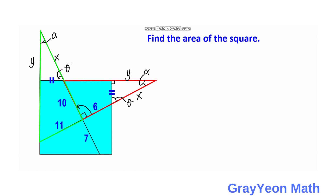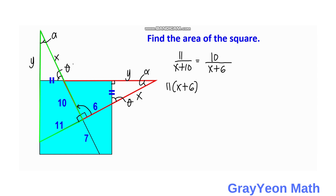We use opposite over adjacent. For the green triangle, the opposite to alpha is 11 and the adjacent is x plus 10. For the red triangle, the opposite is 10 and the adjacent is x plus 6. So we have 11 times (x + 6) is equal to 10 times (x + 10).